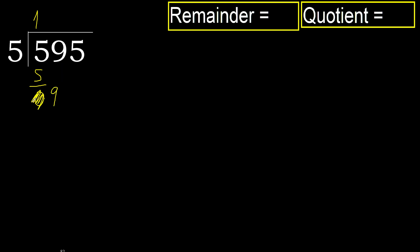Eliminate 0 on this side. Next digit: 9. 5 multiplied by 2 is greater. Multiplied by 1 is 5, is not greater, ok. Subtract. Next.